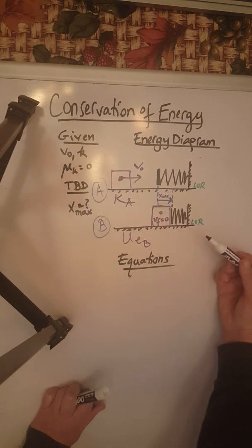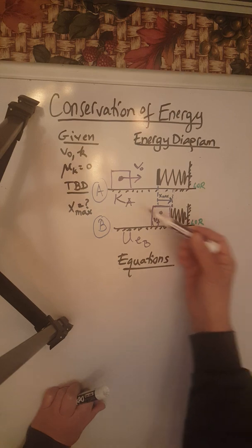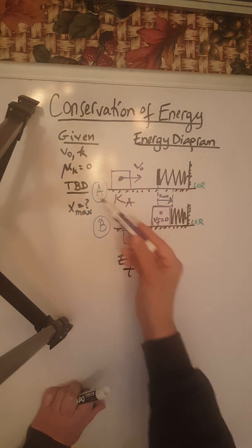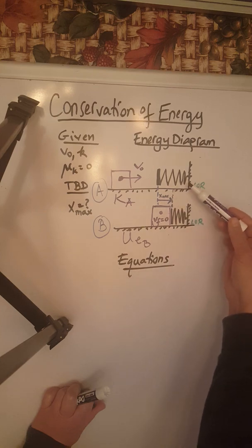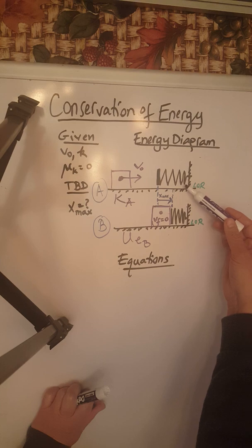There is no friction, so therefore there will be no work done by force of friction to be considered in this problem. So again, for this part of the motion, the spring is in its natural length, so therefore it does not store any energy.